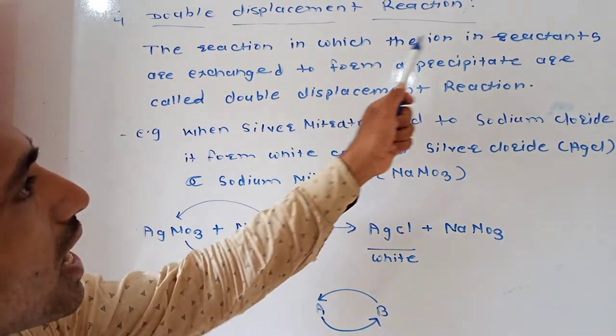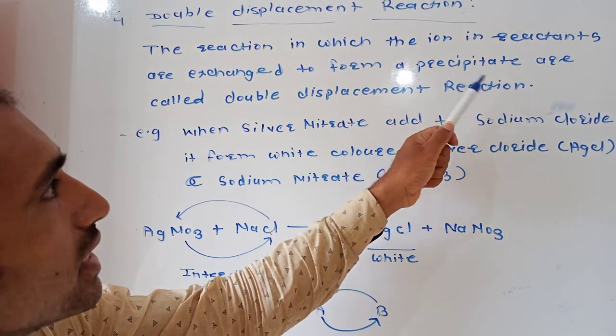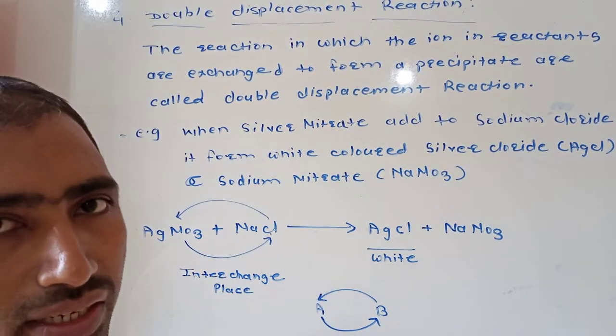The reaction in which the ions in reactants are exchanged to form a precipitate are called double displacement reaction.